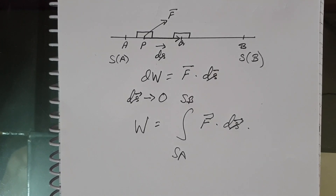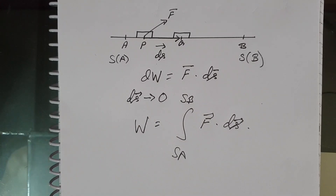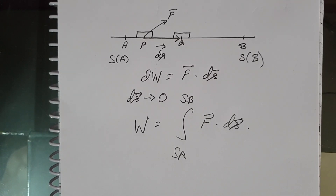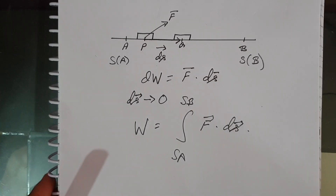For an example of a variable force, consider a block attached to a spring. The force on the block is k times the elongation of the spring, where k is the spring constant. As the elongation changes with the motion of the block, the force is variable. So a spring is an example of a variable force.